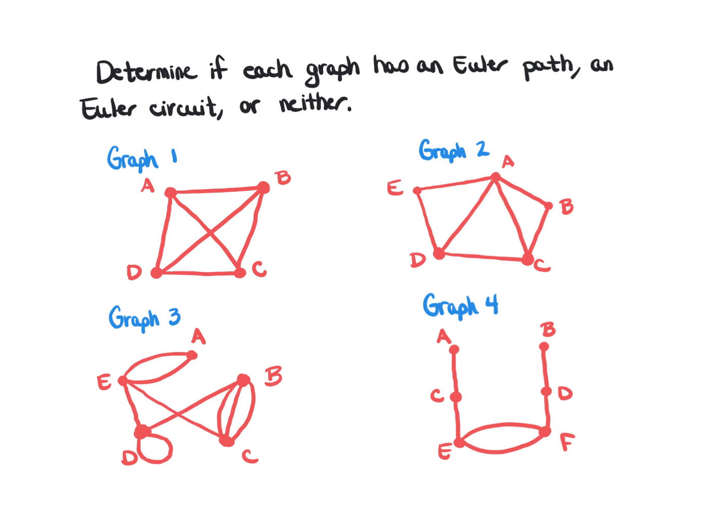For graph number one, starting at vertex A and traveling to D, then C, then B, I find I get stuck — I can't complete a traversal of all edges no matter which way I try. Starting from A down to C and then to B also results in being stuck without having traveled all edges. This graph is neither — it is impossible to travel every edge exactly once.